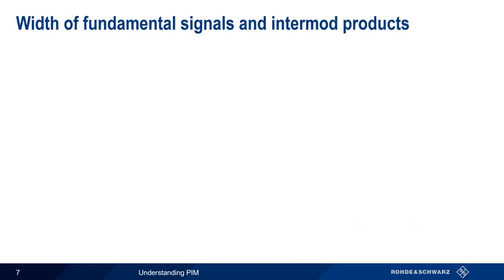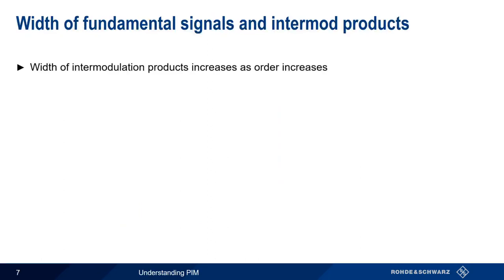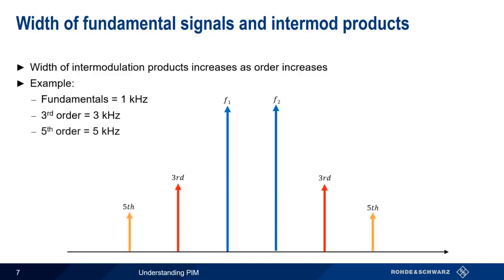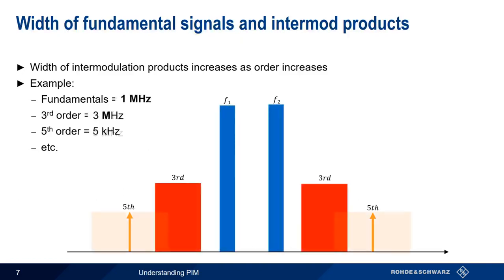One last note about intermodulation products: as the order of intermodulation products increases, the width of the intermodulation products also increases. For example, if the fundamentals are 1 kHz wide, the third order products will be 3 kHz wide, the 5th order products will be 5 kHz wide, etc. This widening may be hard to see for narrow band or CW tones, but becomes much more noticeable for wider signals such as cellular signals that may be several megahertz up to tens or even hundreds of megahertz wide.